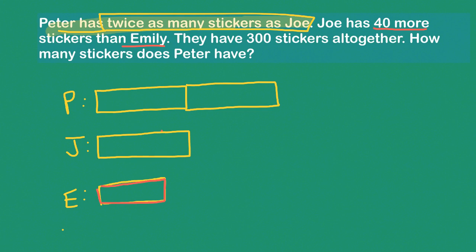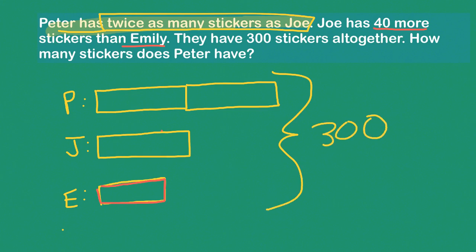And together they have 300. Now with the bar models, what we like to do is divide to find one block. However, right now I cannot divide because I don't have even-sized blocks. You can only divide when you're sharing evenly. These blocks are not the same size — the Joe block is bigger than Emily's, and each of Peter's blocks is also bigger than Emily's. The good thing is I know exactly how different they are: they're 40 different.